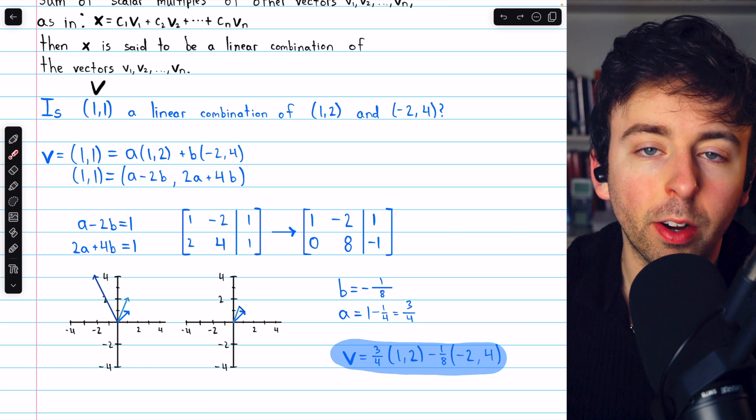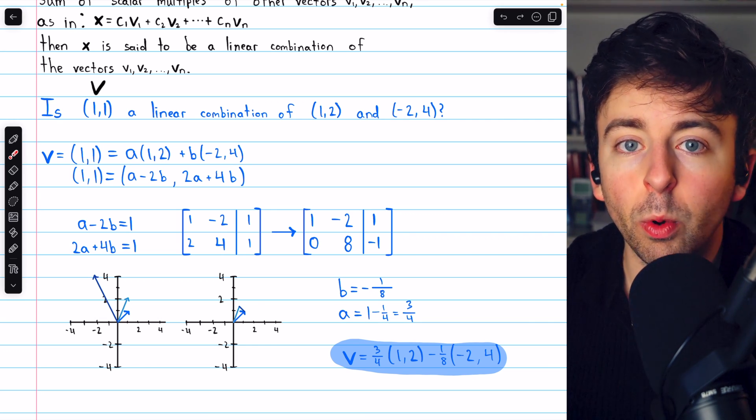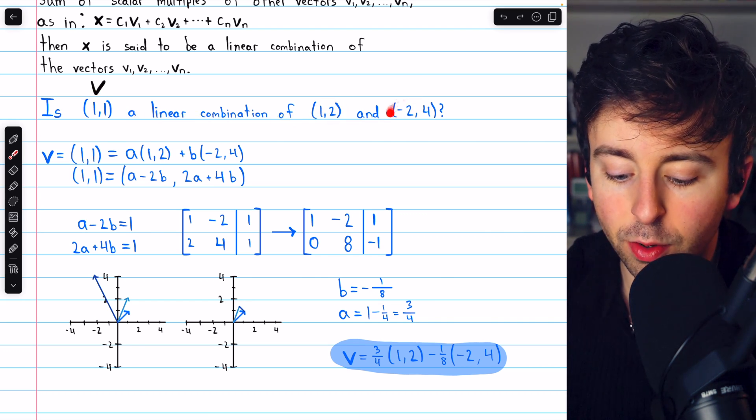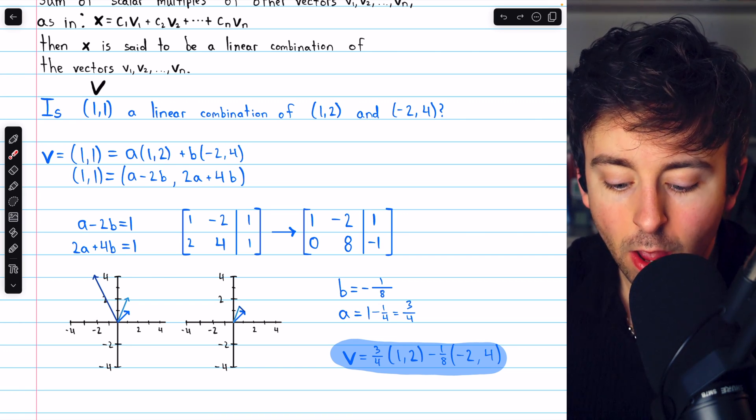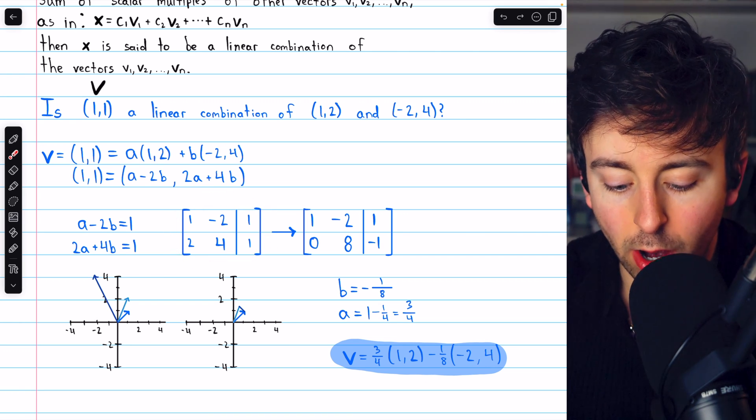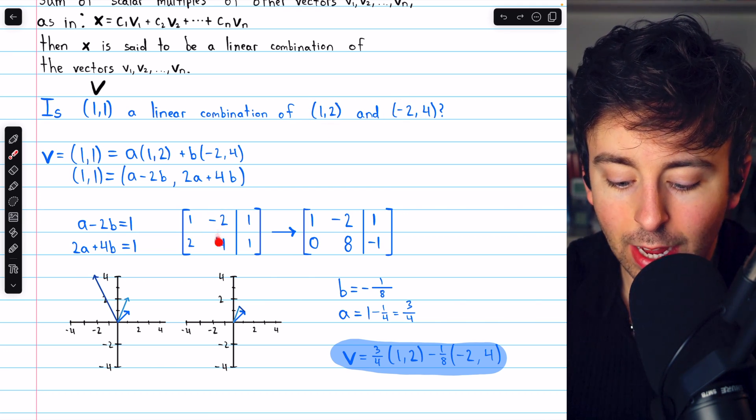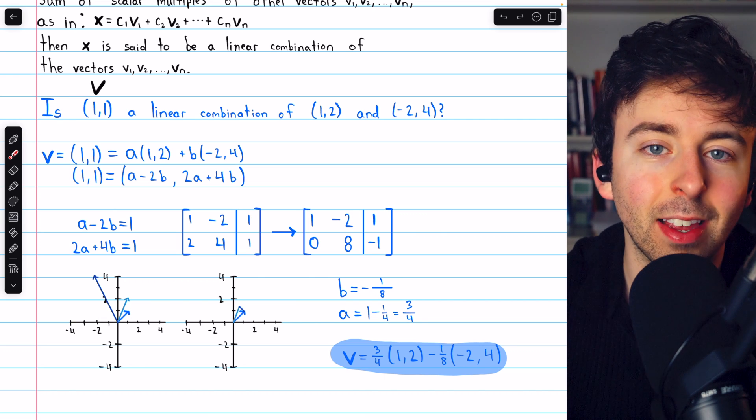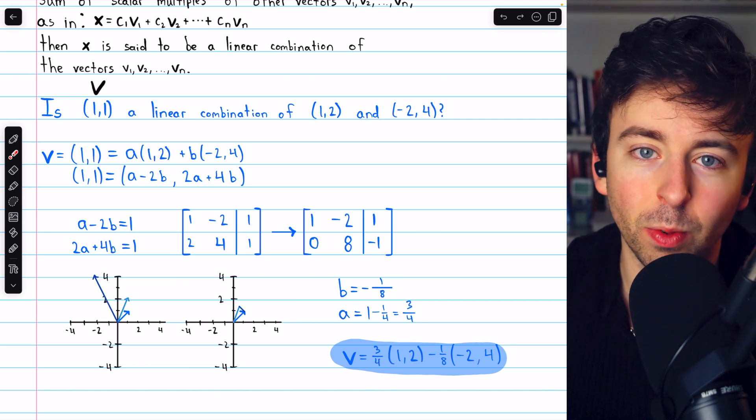Before we do the example with vectors in R3, let's make sure we understand what this process came down to. We're trying to express v as a linear combination of these two vectors. So we ended up performing Gaussian elimination on this matrix, where our columns are the components of those given vectors, and it's augmented with v's components on the right side. We could perform Gaussian elimination or Gauss-Jordan elimination, whatever you like.